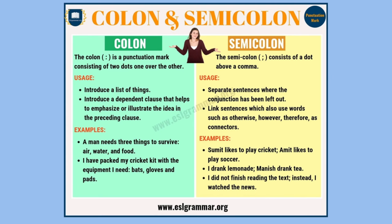Let's look at a few more examples of colons and semicolons, because I know a lot of people get confused. Under the colon side, a colon is commonly used to introduce a list: 'A man needs three things to survive: air, water, and food.' As for semicolons, both sides of each example are independent clauses — 'I drink lemonade' is an independent clause, and 'Manish drinks tea' is an independent clause. That's what's really important to note about these.